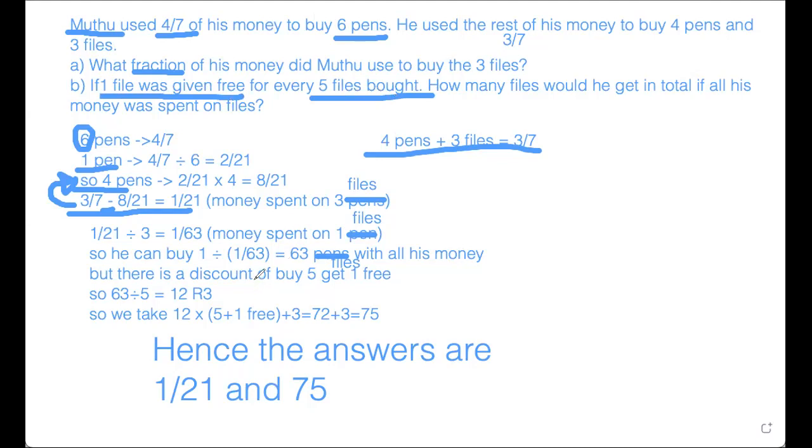with this buy 5, get 1 free discount, we take 63 divided by 5 equals to 12, remainder 3. There are two methods to go to the final solution. One is that we can just take 63 plus 12, or the other one is 12 times parenthesis 5 plus 1 plus 3, which is 75.